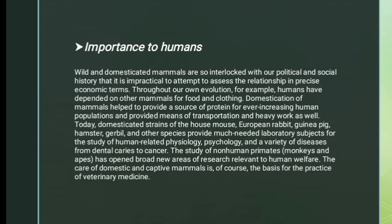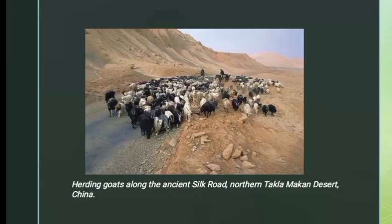Importance to Humans: Wild and domesticated mammals are so interlocked with political and social history that it is impractical to assess the relationship in precise economic terms. Throughout our own evolution, for example, humans have depended on other mammals for food and clothing. Domestication of mammals helped to provide a source of protein for ever-increasing human populations, and provided means of transportation and heavy work as well. Here is a picture of herding goats along the ancient Silk Road in the northern Taklamakan Desert in China.